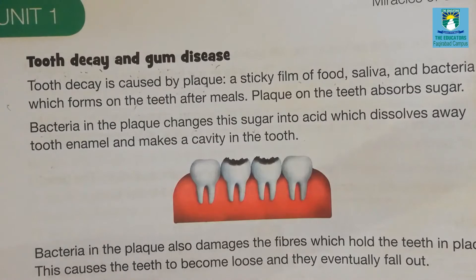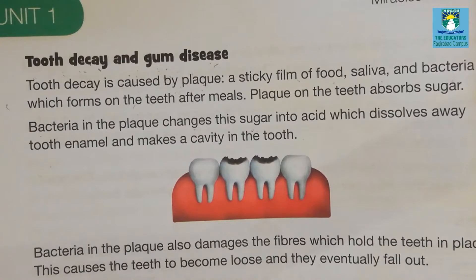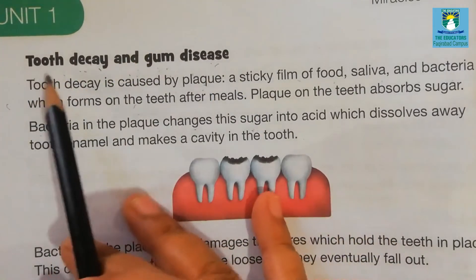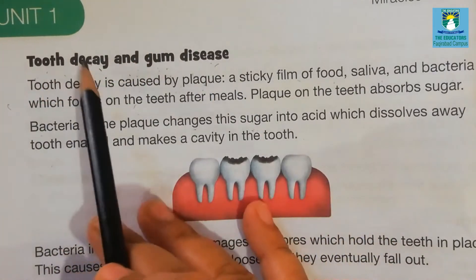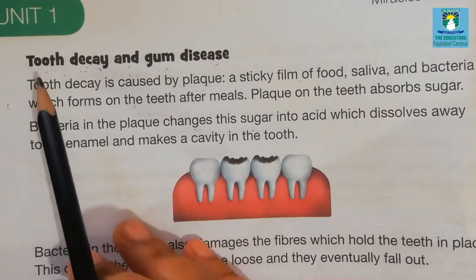In the previous class we discussed the different types of teeth. The first one is incisors, second canine, third premolar, and fourth molar. These are the four different types of teeth. Today we will discuss tooth decay and gum disease.